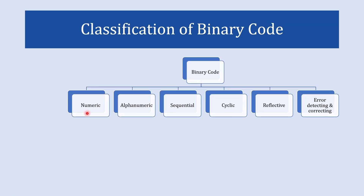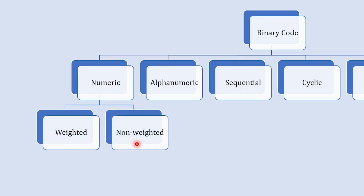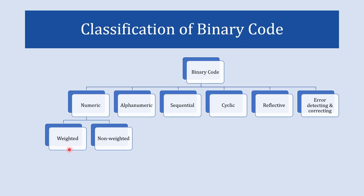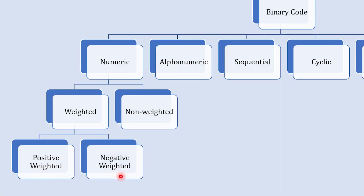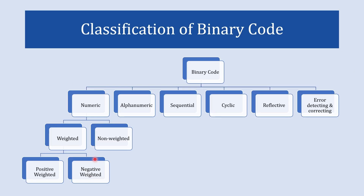The numeric code is further divided into two categories: weighted code and non-weighted code. The weighted code is further divided into two more categories: positive weighted code and negative weighted code. These are all the types of binary codes and now we are going to learn each of them.